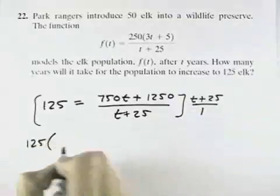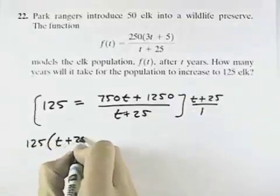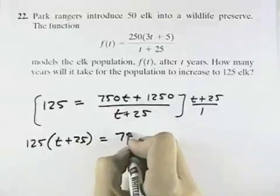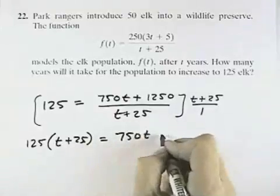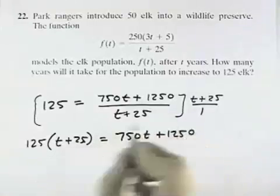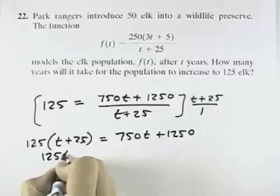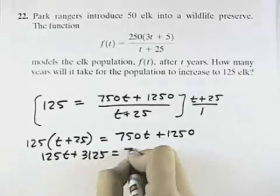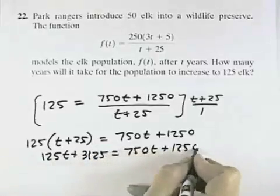So on the left I have 125 times t plus 25 because nothing cancels. But the t plus 25 cancels on the right leaving 750t plus 1250. So I have 125t plus 3125 equals 750t plus 1250.